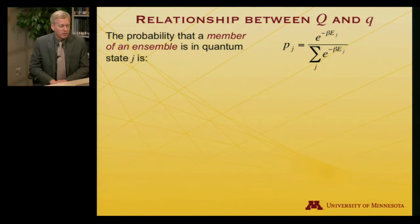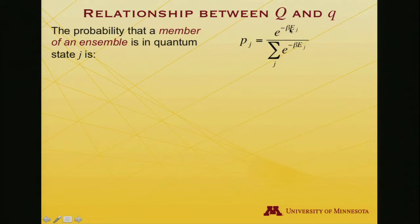Remember that the probability that a member of an ensemble is in quantum state j is given by p sub j. That's the exponential of minus beta times the associated energy divided by the partition function, that is the sum of those exponentials over all possible states.